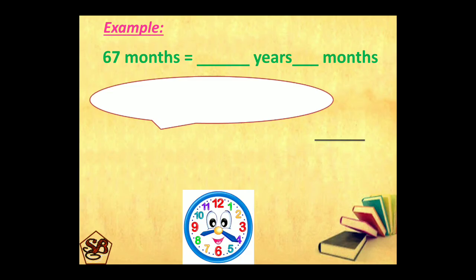Reversing now. That is months to years and months. Smaller unit to bigger unit. That means we are going to divide by 12. 67 divided by 12.